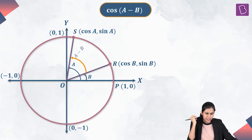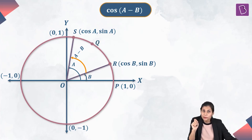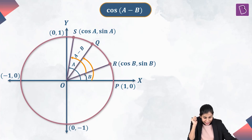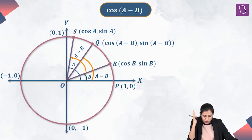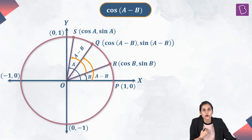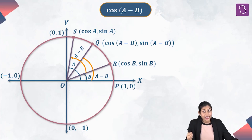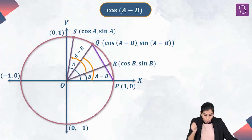Well, the measure is A minus B. Now that I know the measure of the angle A minus B, I am going to do a very smart step. I am going to deliberately consider a point Q on the circle such that OQ makes an angle of A minus B with the positive x-axis in the anti-clockwise sense, so that the coordinates of point Q turn out to be (cos(A−B), sin(A−B)). Now, angle POQ is the angle subtended at the center of the circle by the PQ chord, of measure A minus B.